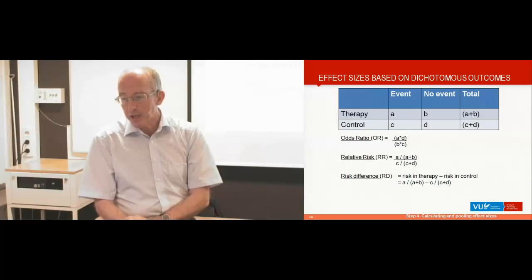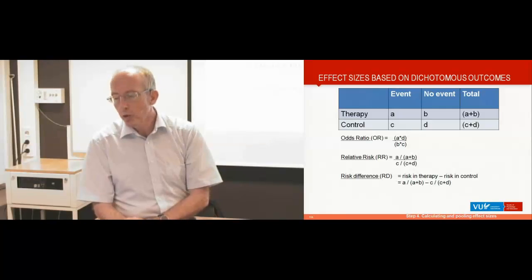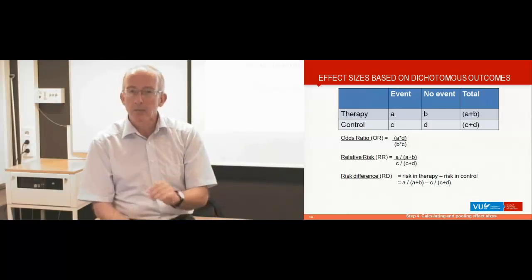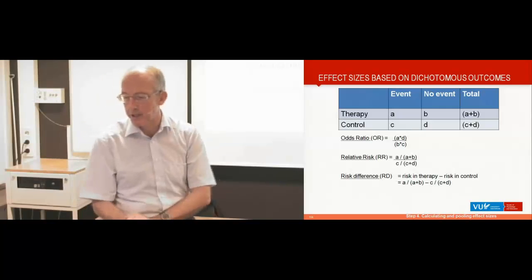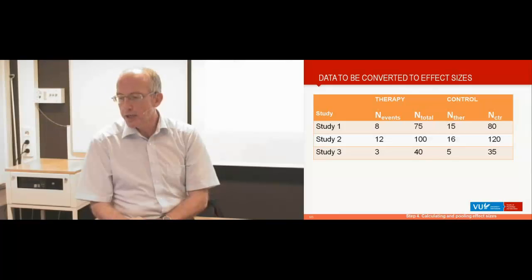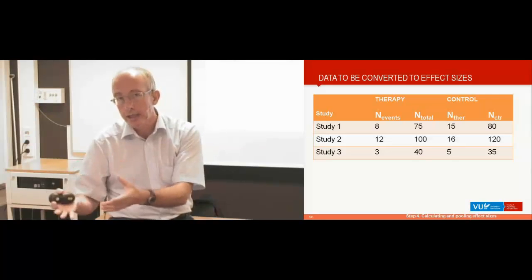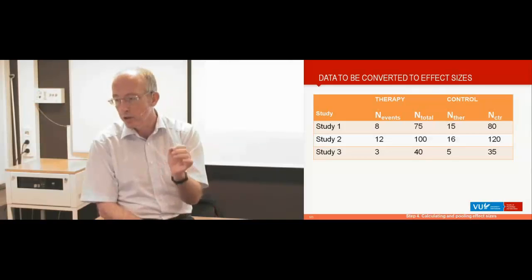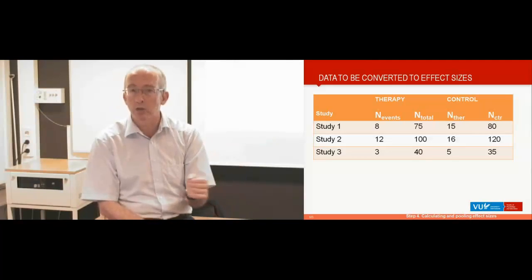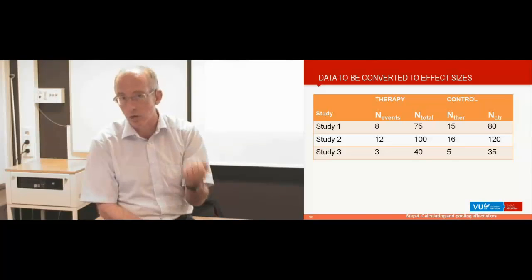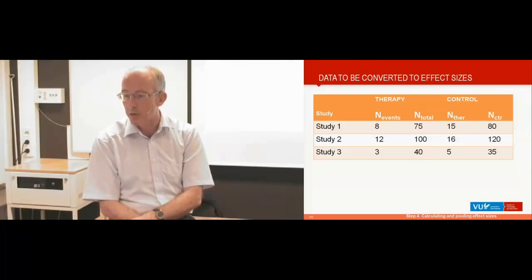You can also calculate effect sizes based on dichotomous outcomes, but then you usually work with odds ratios or relative risks. These odds ratios and relative risks can be directly entered into software for doing meta-analysis. If you collect data based on dichotomous outcomes, you need the total number in the treatment group, the number of events in the treatment group, the total number in the control group, and the number of events in the control group. This allows you to calculate relative risks, odds ratios, or risk differences, and also calculate a pooled relative risk or odds ratio.